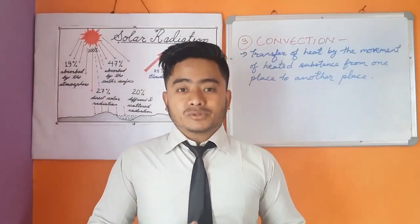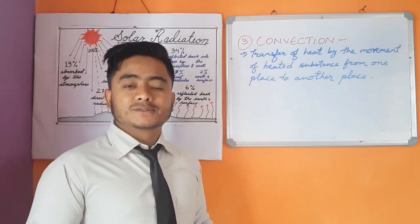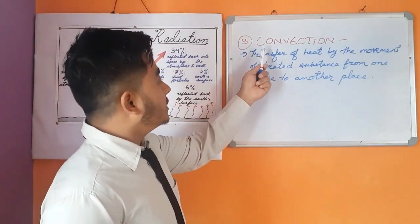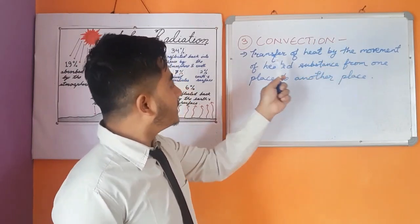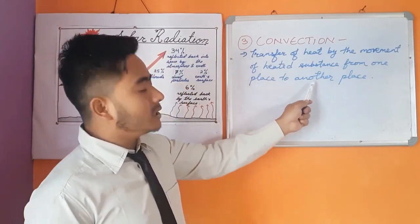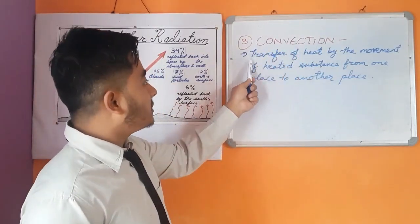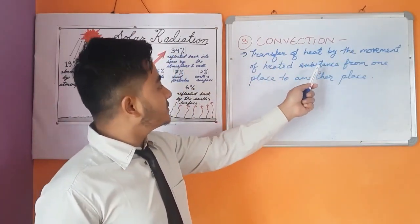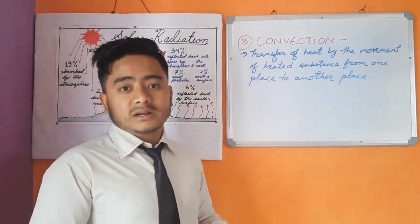The third process of heating of the Earth's atmosphere is convection. Convection is the process of transfer of heat by the movement of a heated substance from one place to another place.